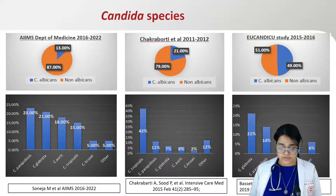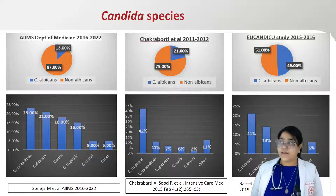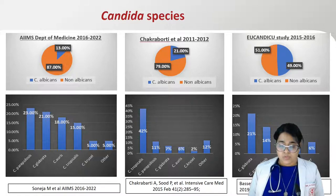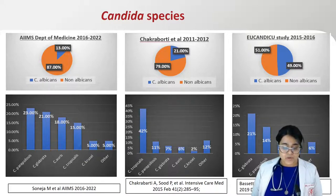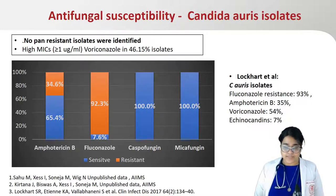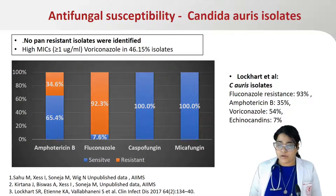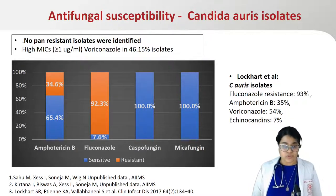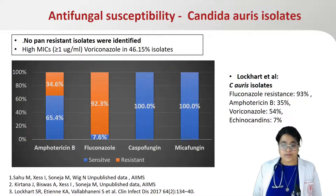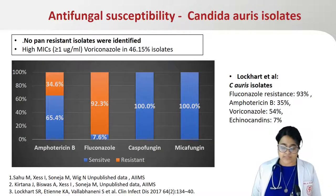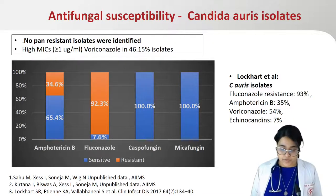Over the last decade, there has been a paradigm shift from Candida albicans to non-albicans species. Our isolates showed 87% non-albicans species, involving parapsilosis, glabrata, tropicalis, and the recently discovered multidrug-resistant Candida auris. Regarding antifungal susceptibility, 18% of our isolates were Candida auris, of which 92% were fluconazole resistant, 35% were amphotericin resistant, and high MICs were reported to voriconazole in almost 46% of isolates. No pan-resistant isolates were identified and all were sensitive to echinocandins. These results highlight the need for strict infection control practices.